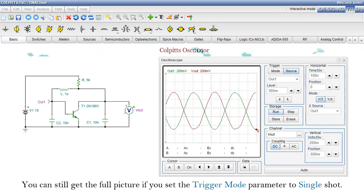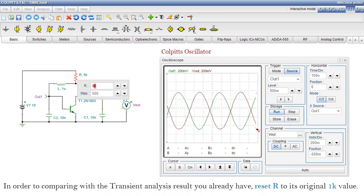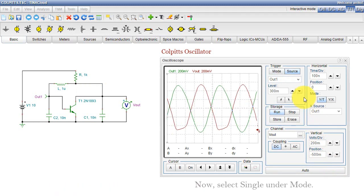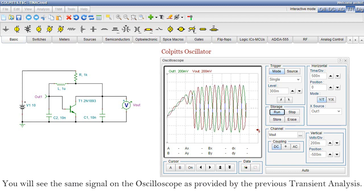Transient recording. You can still get the full picture if you set the trigger mode parameter to single shot. In this case, the oscilloscope will display the curves only once, starting from t equals 0, very similar to how it is done in the transient analysis. In order to compare with the transient analysis result you already have, reset R to its original 1k value. Now select Single under Mode. You must also set the horizontal time division settings accordingly. Press the Run button. You will see the same signal on the oscilloscope as provided by the previous transient analysis.